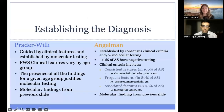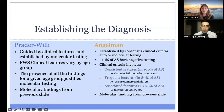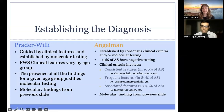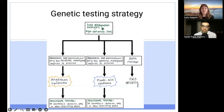For Prader-Willi syndrome, the diagnosis is established by molecular testing. However, the presence of clinical features is used to justify ordering molecular testing. Any of the molecular or genetic findings discussed establishes a diagnosis of Prader-Willi syndrome. For Angelman syndrome, molecular testing also establishes a diagnosis. However, because 10% of Angelman patients have negative molecular or genetic testing, a diagnosis may also be established by clinical criteria, which is divided into consistent, frequent, and associated features. Here is a visual representation of a testing strategy, which we will walk through.